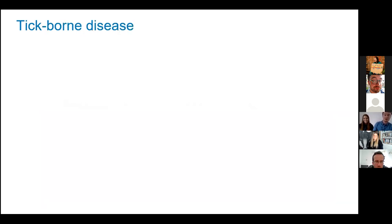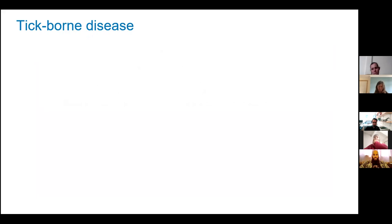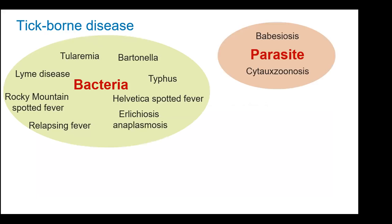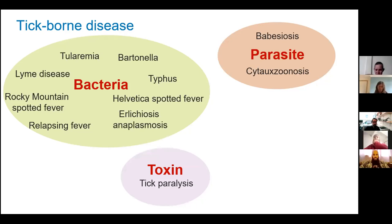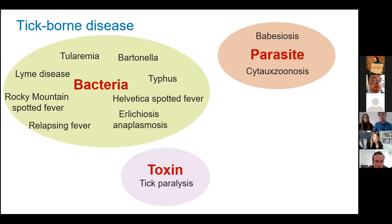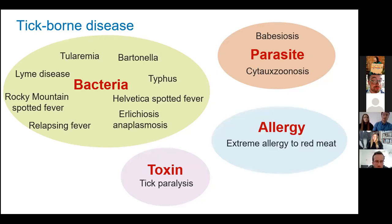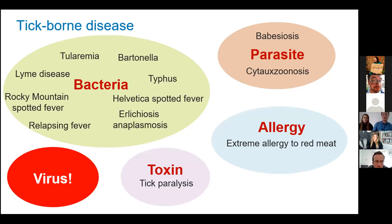Now onto the fun part of our talk — the different things ticks can carry. We do want to note that this is not intended to scare anyone. As it stands, these things are very, very rare to come across, but it's always very good to be aware. Ticks can carry a whole host of pathogens, some of which are able to cause disease in humans, such as bacteria, parasites, and toxins. Even when the tick isn't carrying anything, certain tick species' bites have been known to trigger an alpha-gal reaction in the unlucky people to be bitten, which may cause them to have an allergy to red meat. And of course, ticks also carry viruses.